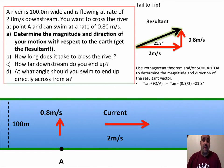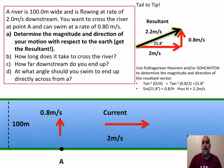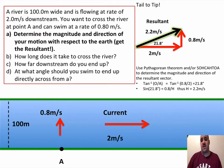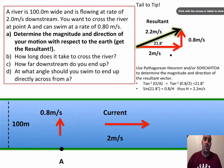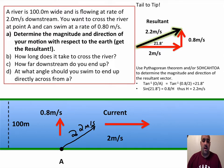We can use Pythagorean theorem to get the resultant magnitude, or now that we know the angle we can use sine or cosine. That turns out to be 2.2 meters per second. So if you're in a river flowing at 2 m/s and swimming across at 0.8 m/s, your net motion is 2.2 meters per second at an angle of about 22 degrees with respect to the shore.